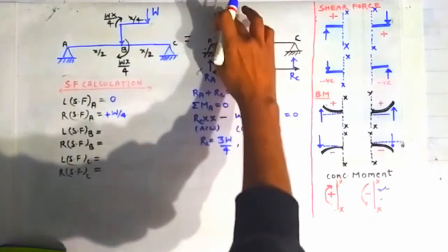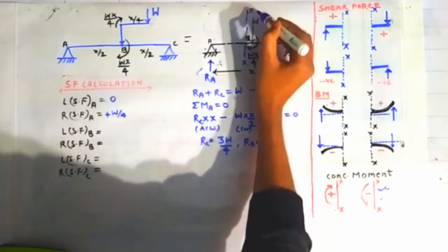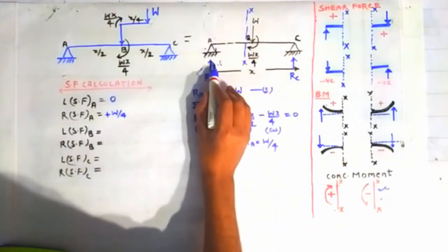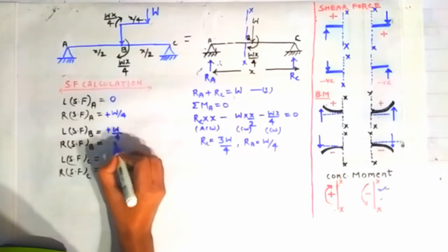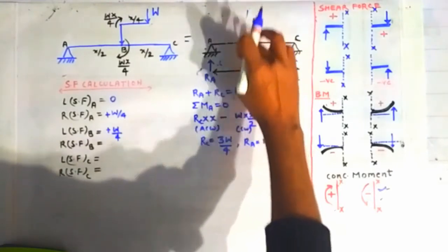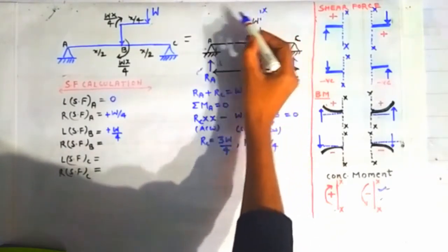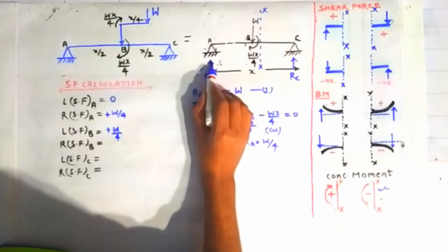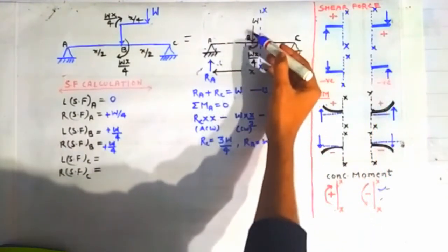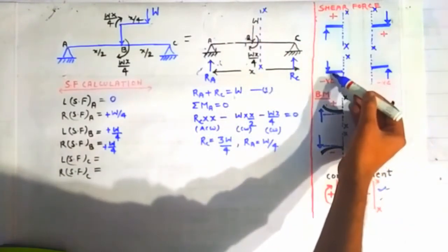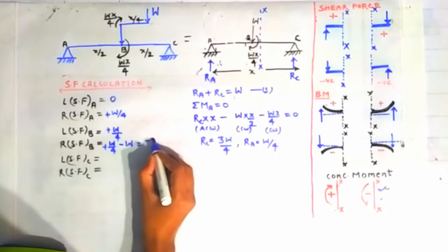On the left side of point B, constructing a section there, only Ra lies on the left side, contributing a positive shear force of W/4. On the right side of point B, Ra contributes +W/4, but load W contributes a negative shear force of magnitude W, giving a net shear force of W/4 − W = −3W/4.